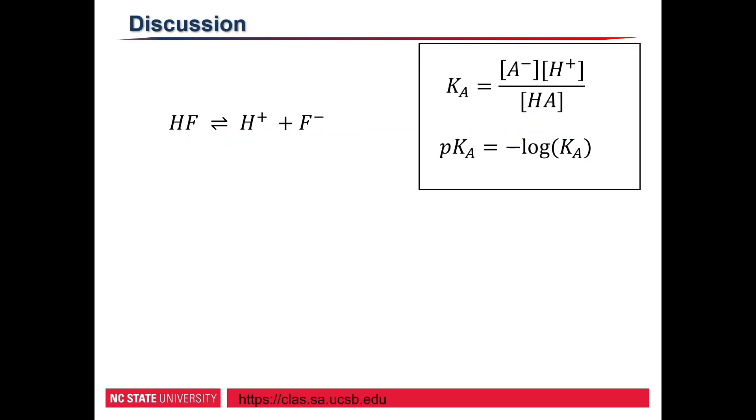A little bit of background before we get into things. Ka is known as the acid dissociation constant. It tells us the favorability of an acid dissociation reaction.